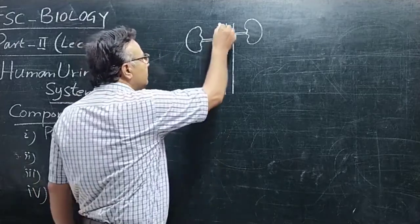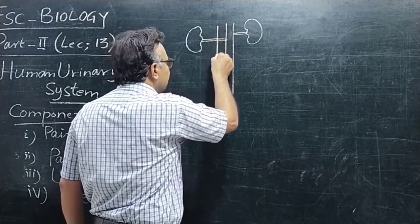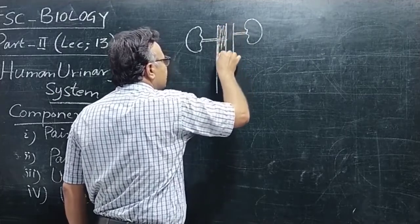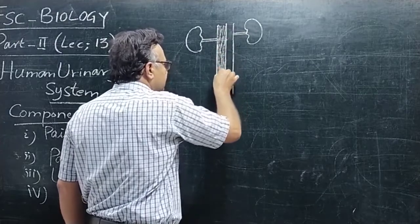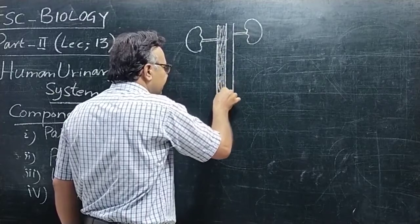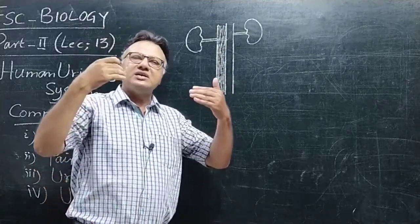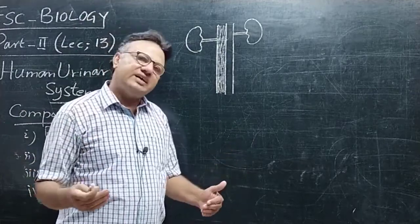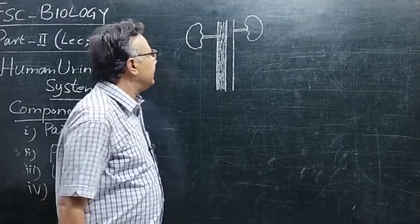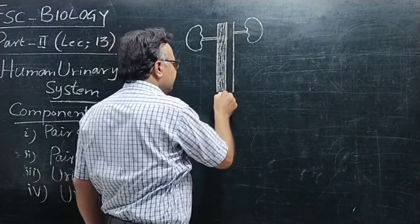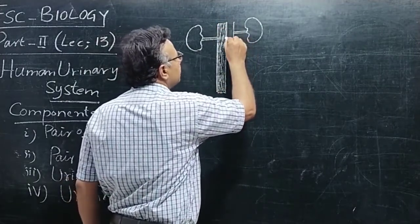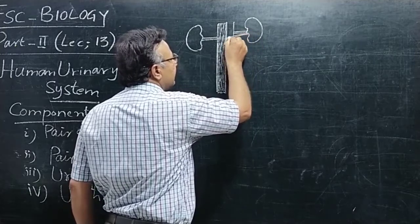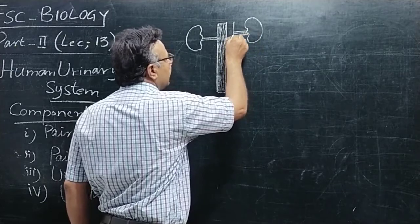Renal veins باہر کی طرف آتی ہیں اور ایک بڑی وین میں آ جاتی ہیں — یہ inferior vena cava کا حصہ ہے۔ یہ نیچے سے lower body part سے deoxygenated blood کو collect کر کے اوپر کی طرف آ رہی ہے۔ Renal veins kidneys میں سے deoxygenated blood لے کر اس inferior vena cava میں شامل ہو رہی ہیں۔